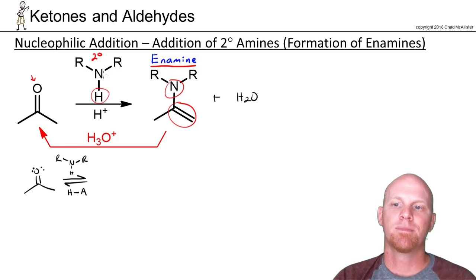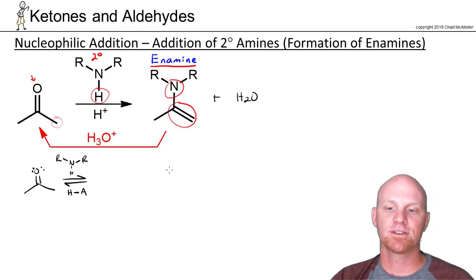So the question is where do the two hydrogens come from? Well one of them comes right here, but the nitrogen doesn't have another hydrogen, so the other one's going to come from an alpha carbon, which is why we get the double bond in this location as we'll see when we go through the mechanism.